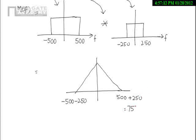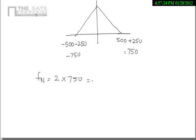What is the highest frequency now? It is 750. The signal spans from minus 750 to 750. So what is the Nyquist frequency of the signal? It is twice the highest frequency present in the signal, which is 750. That means it is 1500 hertz.